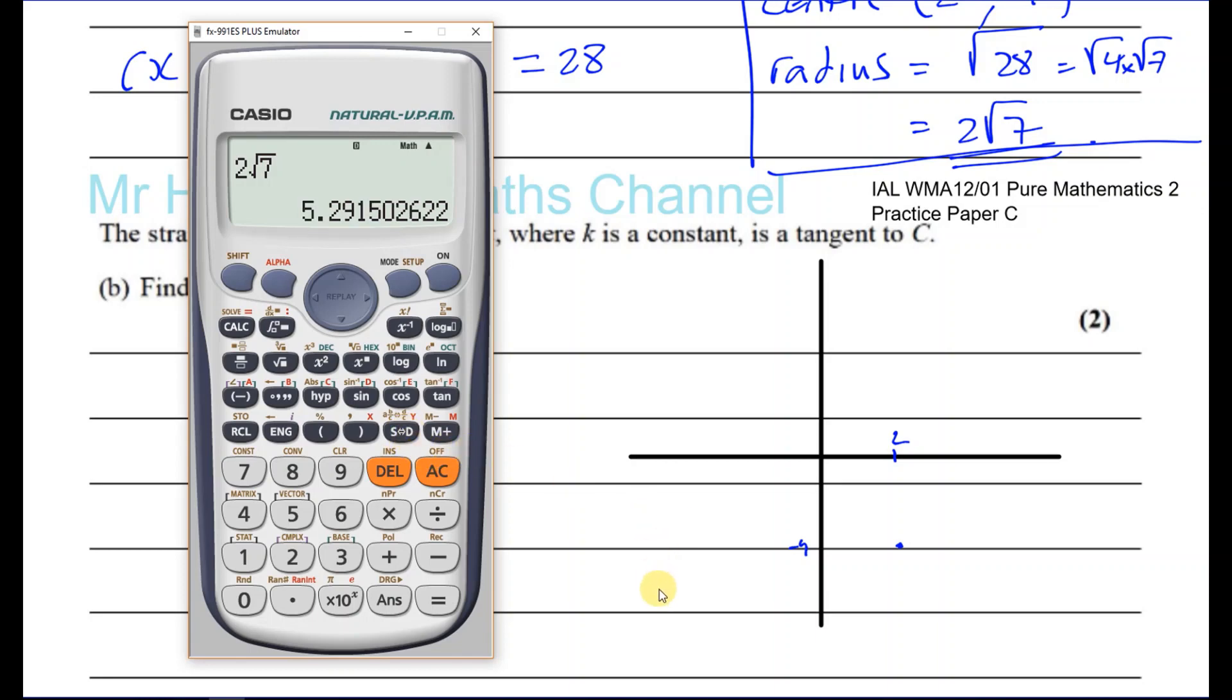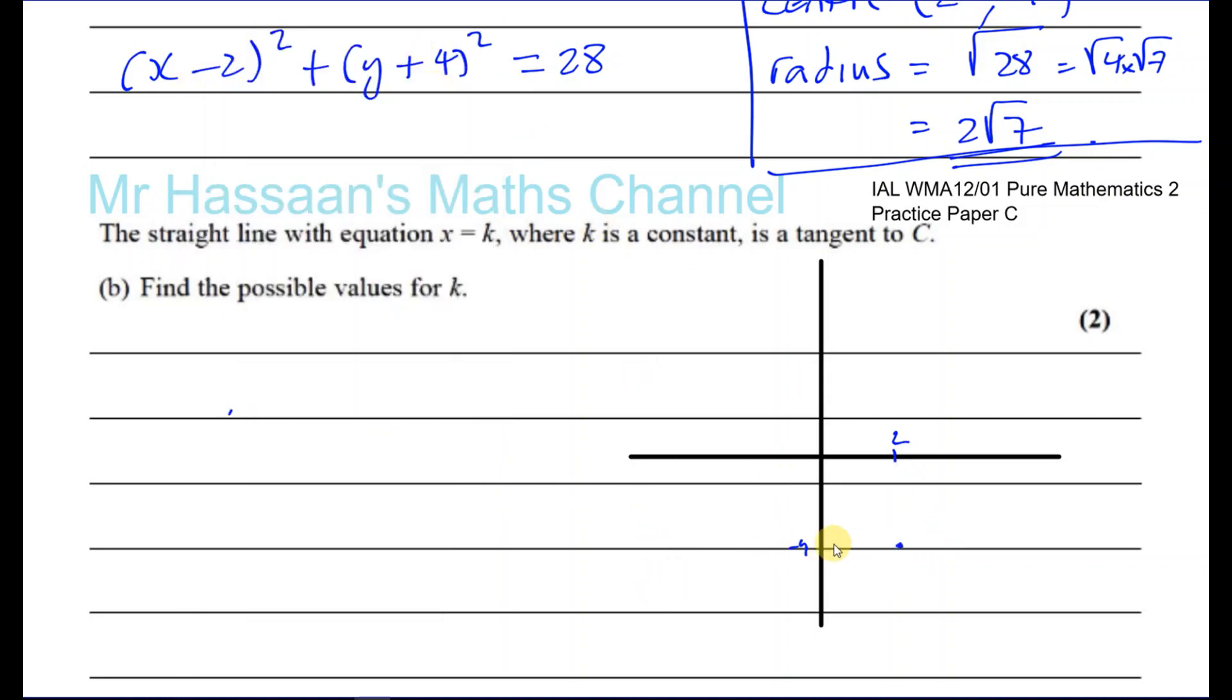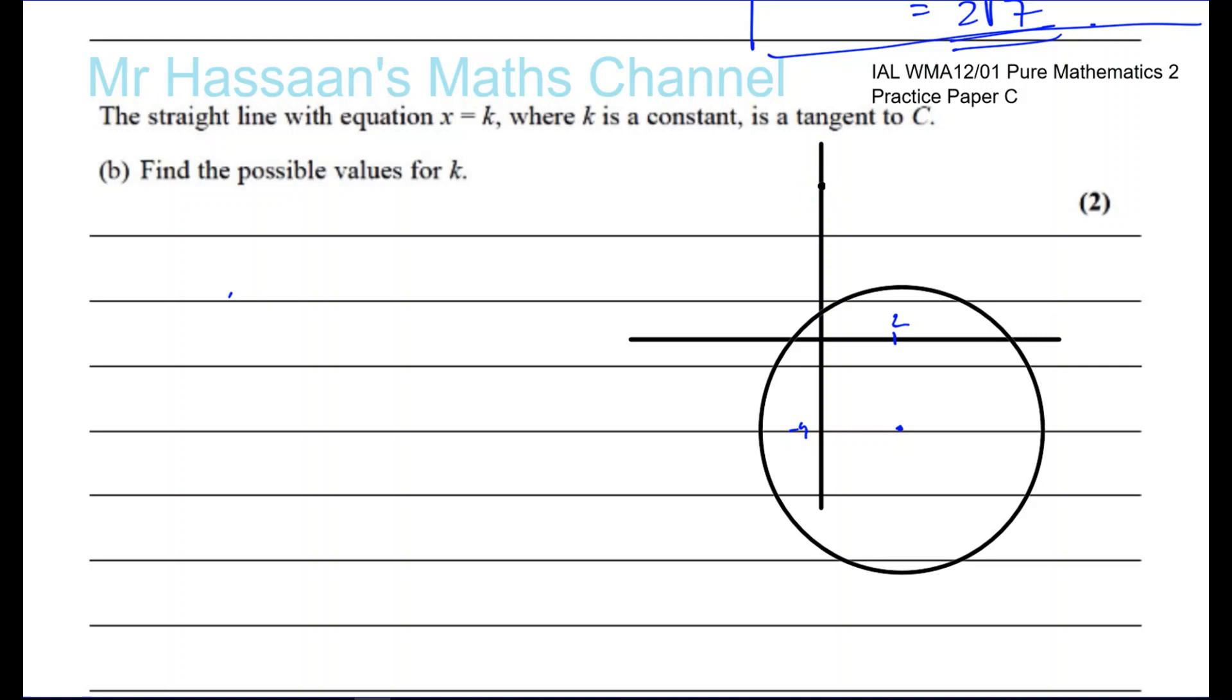So it's bigger than 2, so we know it's going to go on that side a bit. I'm not making this an accurate diagram, but I know it's going to go that way a bit. Say that's your x-axis, and that's your y-axis, and that's your origin, and that's the center of the circle.